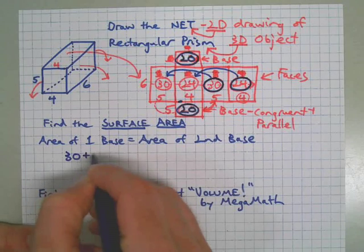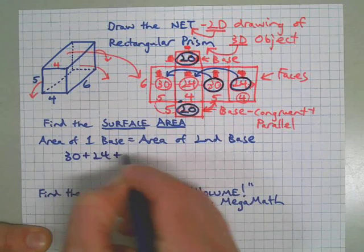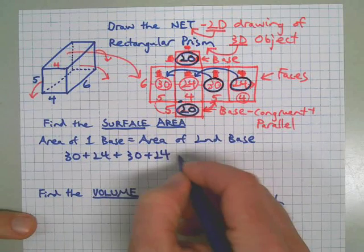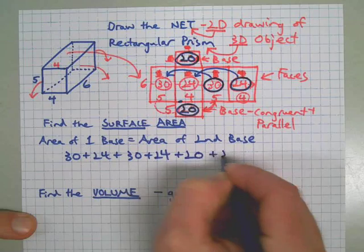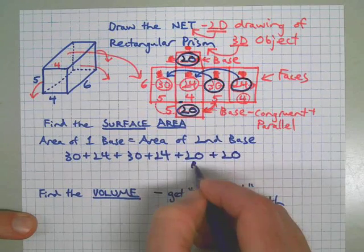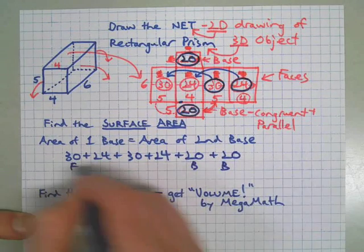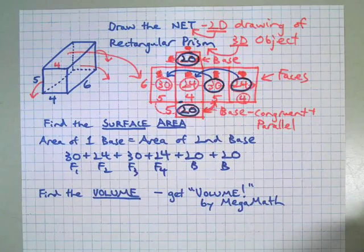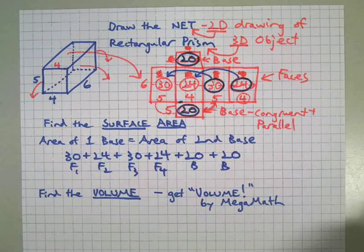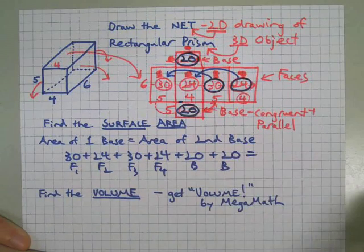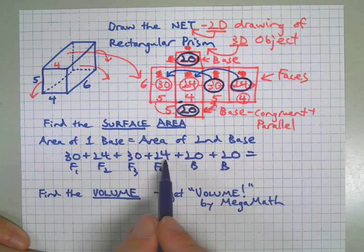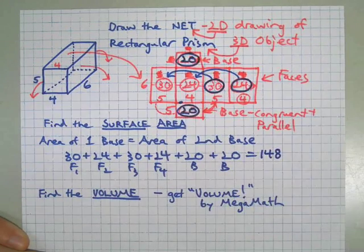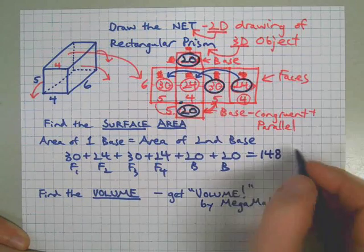We did three calculations for six answers. Now to find the surface area, we simply add all those answers together. I'm just doing them in order, you can do whatever order you want, you could group the 30s and the 24s. So I've got base, base, and then these are the four faces: face one, face two, face three, and face number four. If this was a triangle, you'd only have three faces. Add all these together: 54 and 54 is 108, plus 40 is 148.